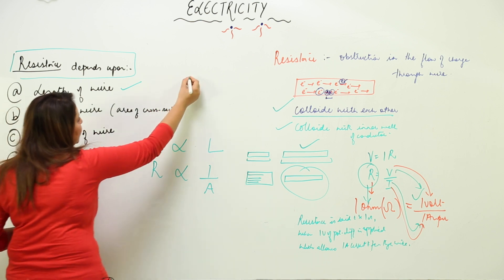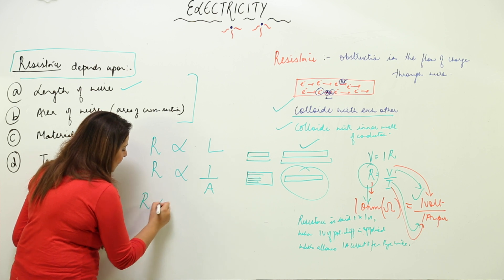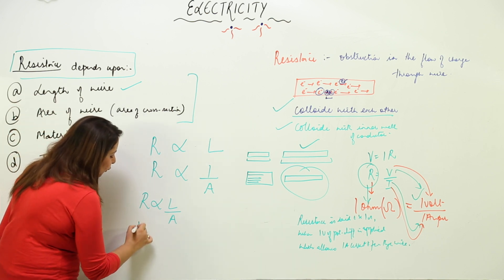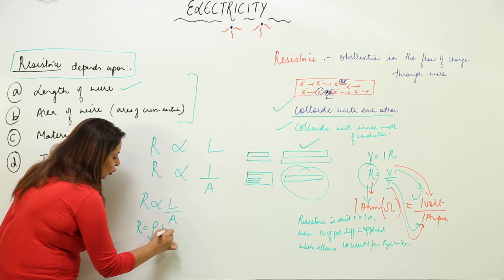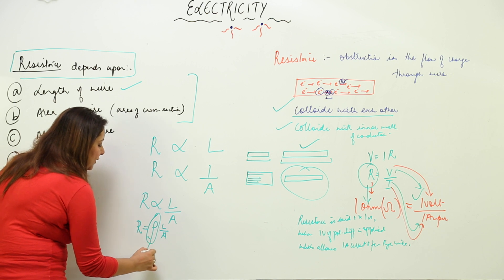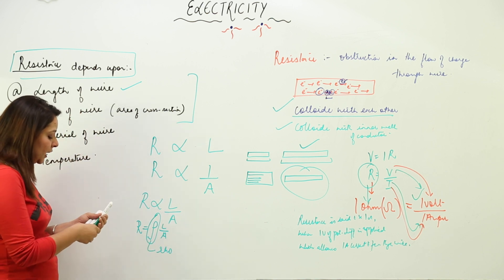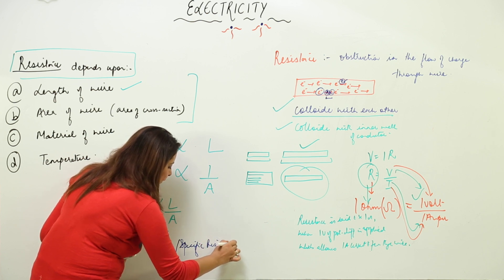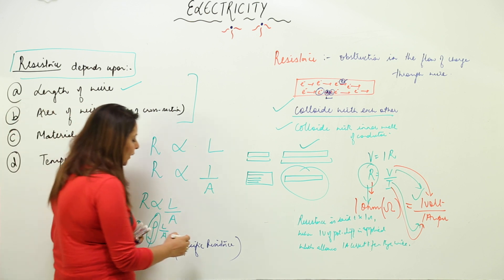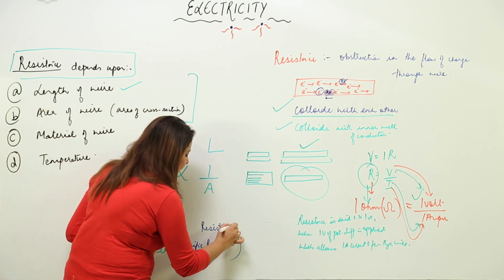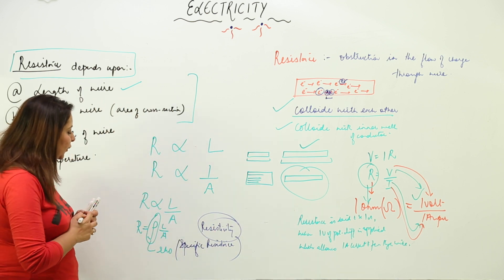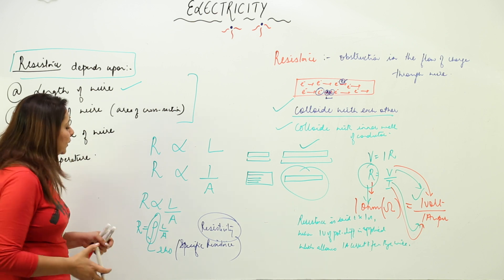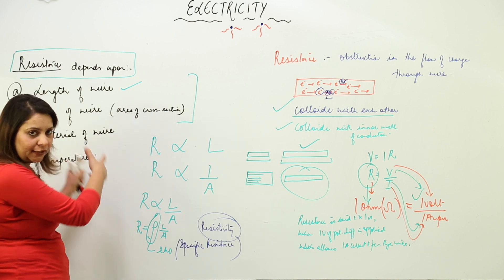Combining both relations — R directly proportional to length and inversely proportional to area — and removing the proportionality sign by introducing a constant ρ (rho), we get R = ρL/A. The constant ρ is called specific resistance or resistivity, denoted by the symbol rho.